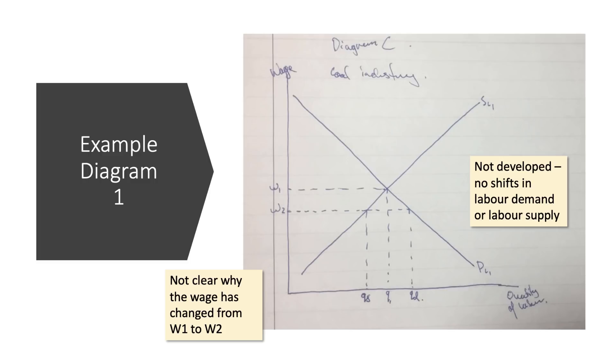This first one, it looks fine, it's a diagram about the coal industry. I think the question was about the impact on the demand and supply of coal workers, following an increase in renewable energy and the decline of coal. I think the candidate here is trying to show that wages will fall and employment will fall in the coal industry, but this is not a developed diagram. This is just a simple supply and demand two-dimensional diagram. There's no shifts in labour demand or labour supply. It's not clear at all why the wage has changed from W1 to W2. We see lots of these diagrams in exams. They are low-level analysis diagrams.